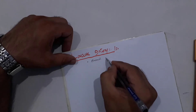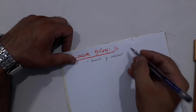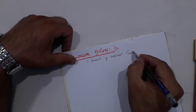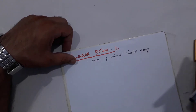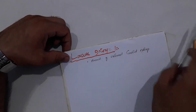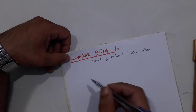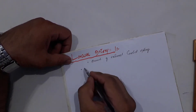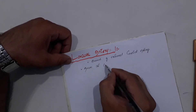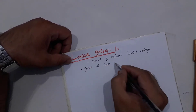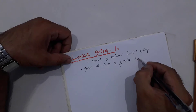The lingual artery is a branch of the external carotid artery. Regarding its origin — from where does it arise — it arises at the level of the greater cornu of the hyoid bone.